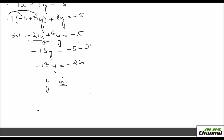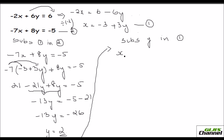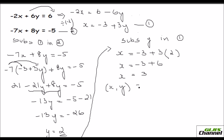Now y is 2. Substitute y into equation 1 to find x. Equation 1 is x equals minus 3 plus 3y. Substituting y equals 2: x equals minus 3 plus 3 times 2, which is minus 3 plus 6, so x equals 3. Your solution is x comma y equals 3 comma 2.